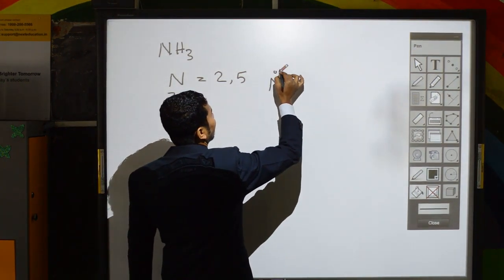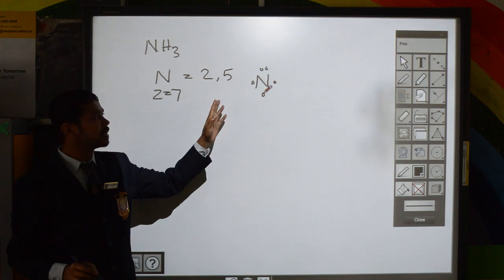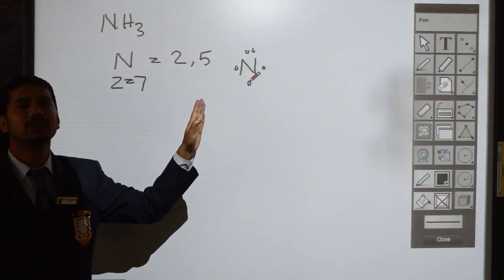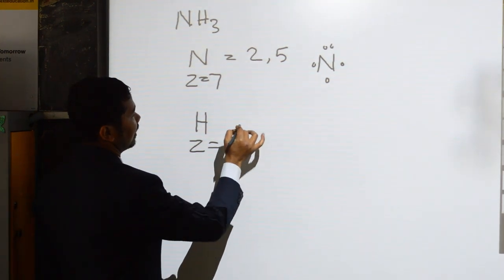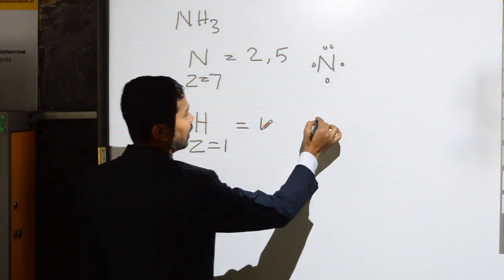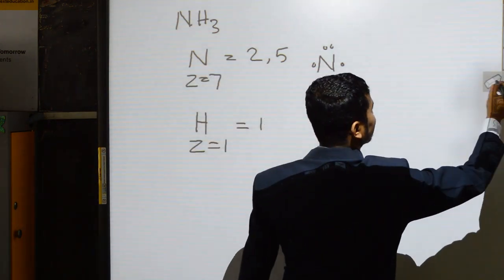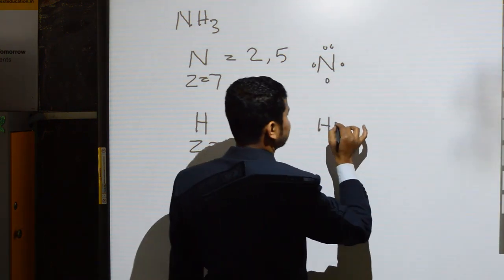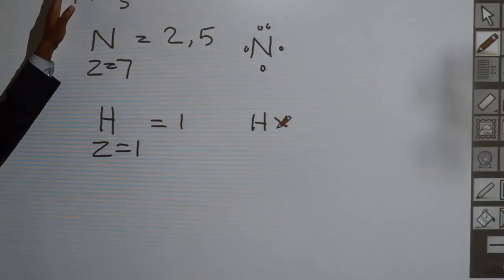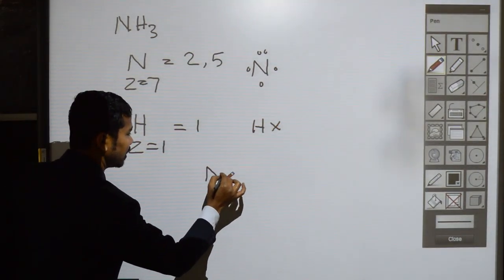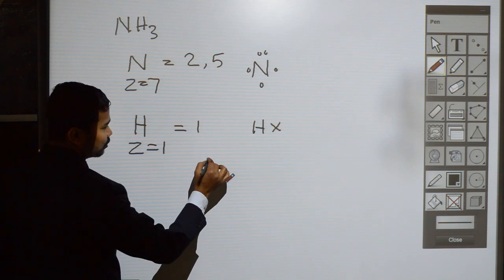Nitrogen has 5 valence electrons; to complete its octet it needs 3 more electrons. Hydrogen has atomic number 1, electronic configuration 1, with one valence electron shown by a cross. There are three hydrogen atoms and one nitrogen atom, and we can show the molecular structure of ammonia using a dot-and-cross diagram.